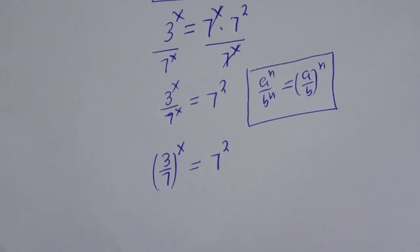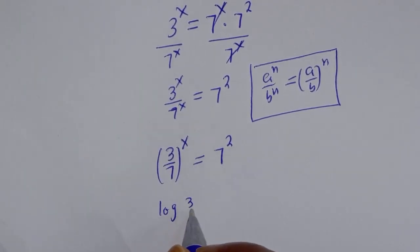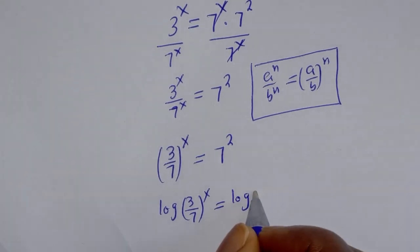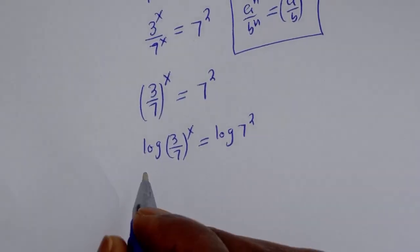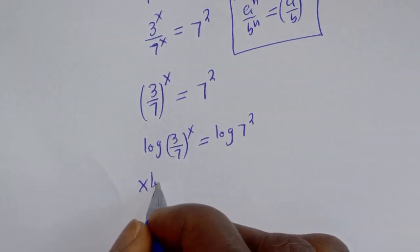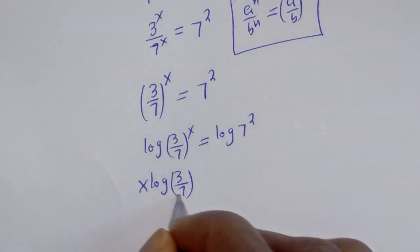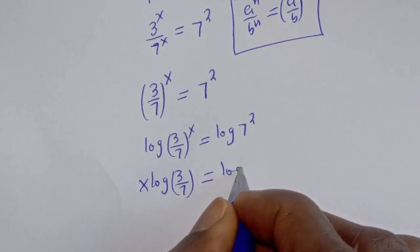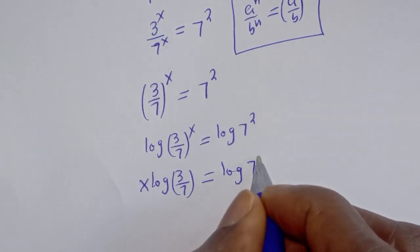Let's take the log of both sides. Log of 3 over 7 to the power s is equal to log 7 squared. We have s times log 3 over 7 is equal to log 7 squared.